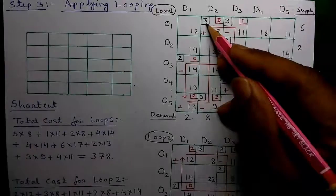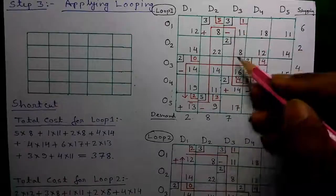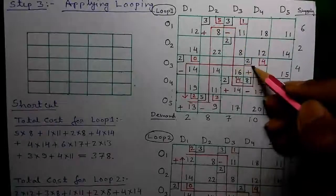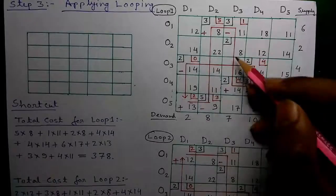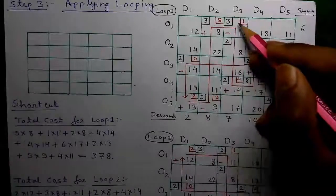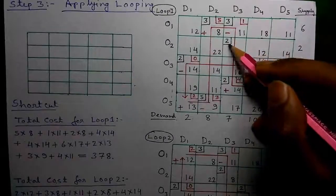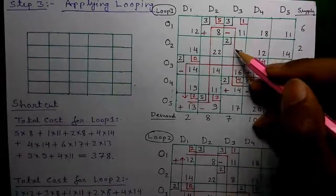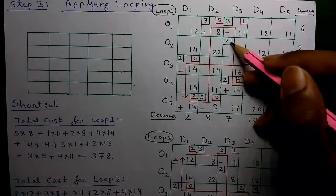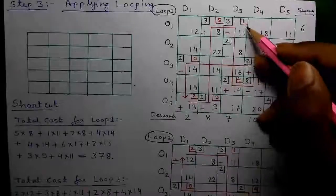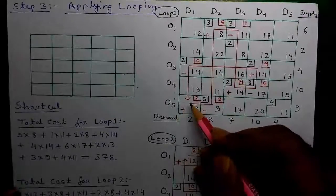The first bend happens at an allocation cell, the next bend at the next allocation cell, and so on — each corner point of the loop must be an allocated cell. The loop can overlap, and on the loop path the loop can pass through or pass over any allocation cell, but those pass-through cells are not calculated since they are not corner cells. Only the cells at corners are included in the calculation.